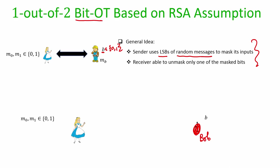Alice and Bob start the protocol as follows. Alice has inputs M0 and M1, and Bob starts with his choice bit. Alice runs the RSA parameter generation algorithm: she picks distinct random primes P and Q of lambda-bit size, computes the modulus n = P·Q, picks a random E coprime to φ(n), runs the extended Euclidean algorithm to compute D, and makes n and E public.